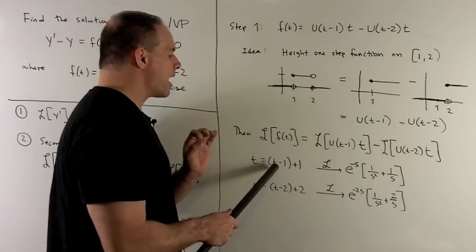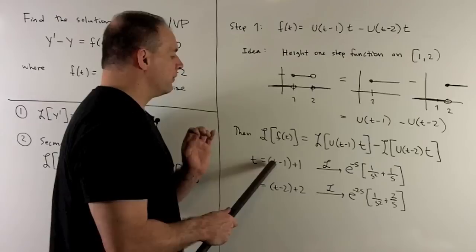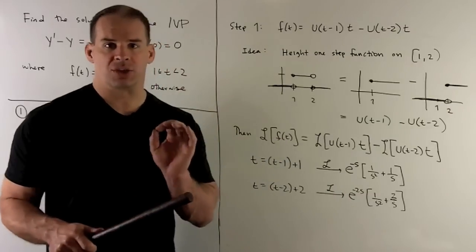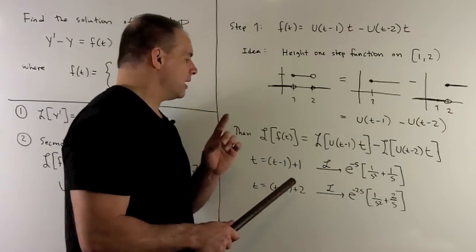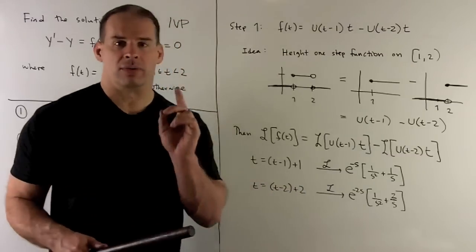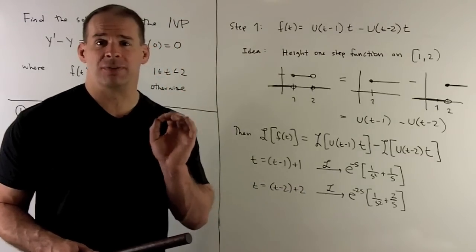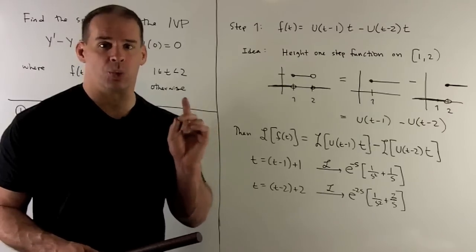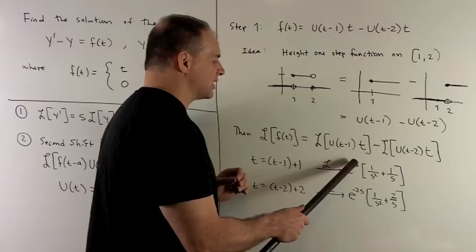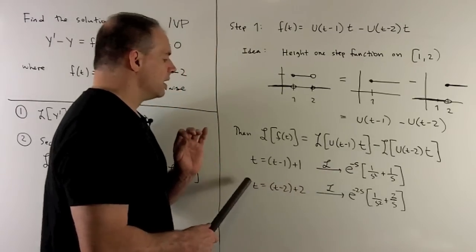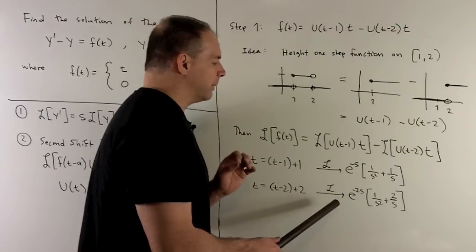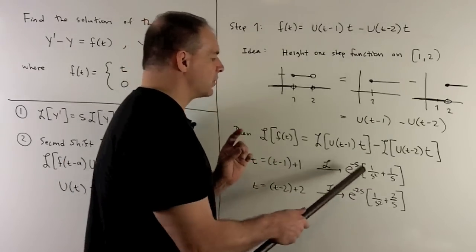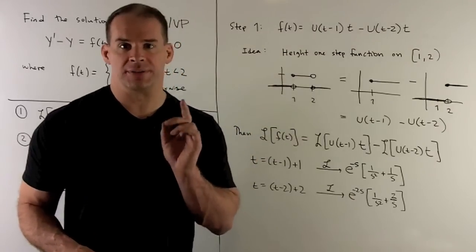We take the Laplace transform. The t-prime part goes to one over s squared, the constant one goes to one over s, and the second shift formula says we correct by e to the minus s times a. With a equal to one we correct by e to the minus s, and for the second term with a equal to two the correction is e to the minus two s. Taking the difference gives the Laplace transform of f of t.